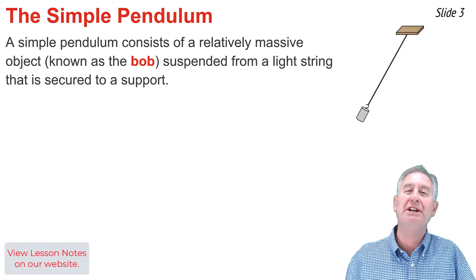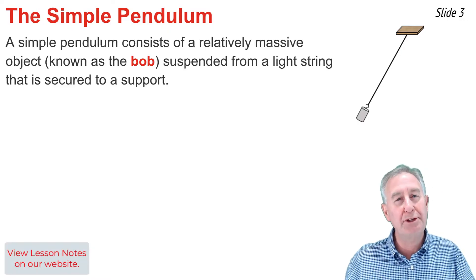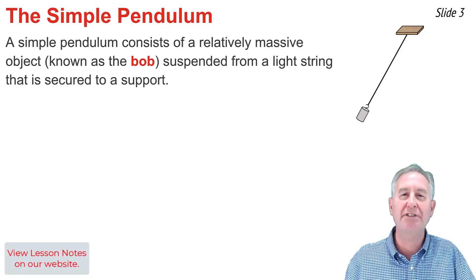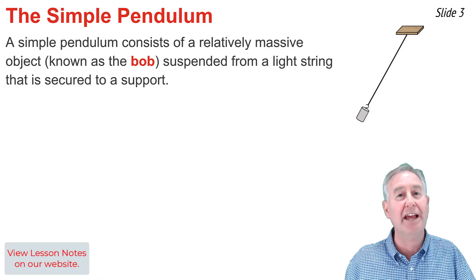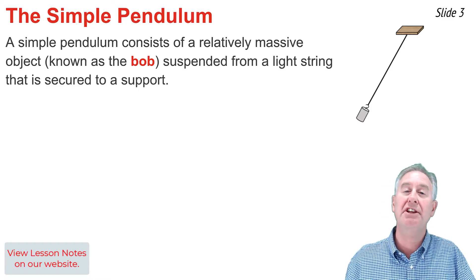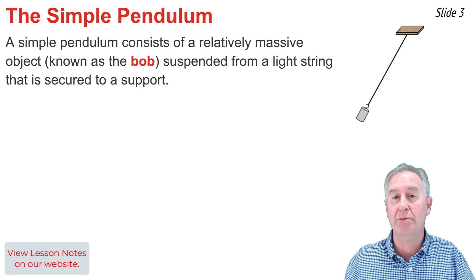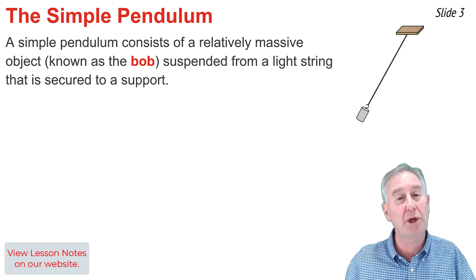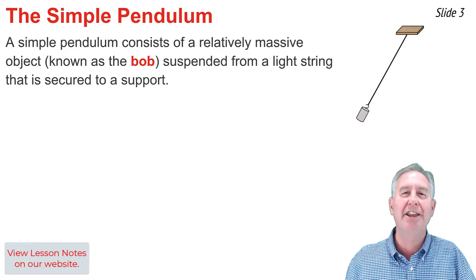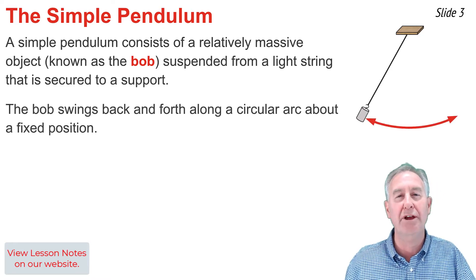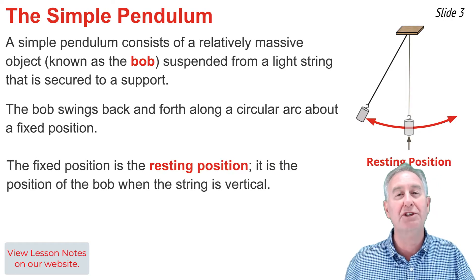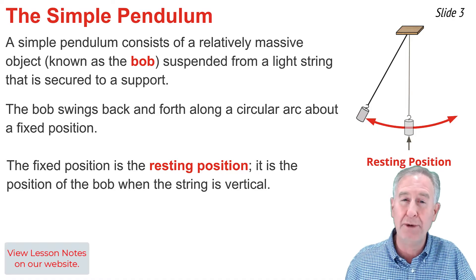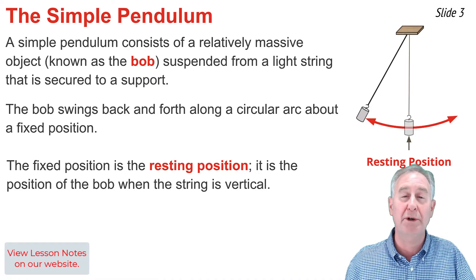You have likely seen a pendulum in motion. A pendulum consists of a relatively massive object attached to a string — we refer to that massive object as the bob. The opposite end of the string is attached to some sort of support at the point of attachment, which we call the pivot position. The pendulum swings back and forth about a fixed position along a circular arc. That fixed position is known as the resting position — it's the position that the bob and the string would assume when it's not vibrating whatsoever.